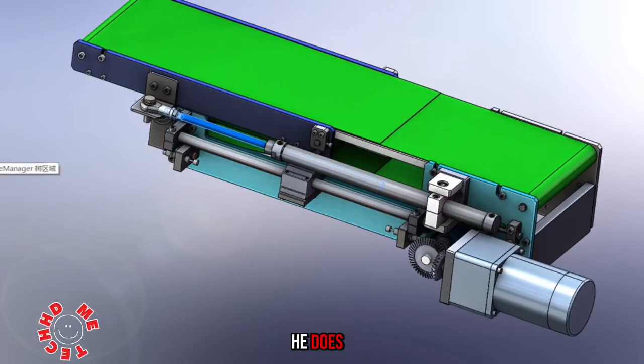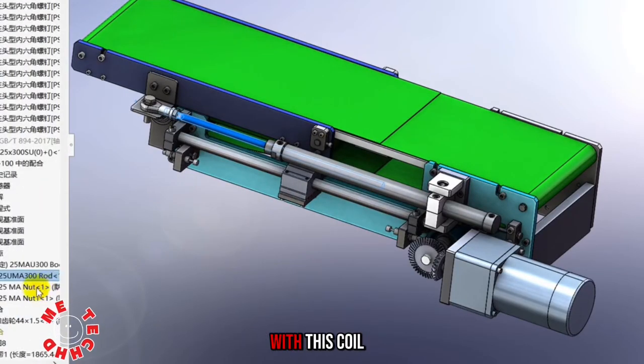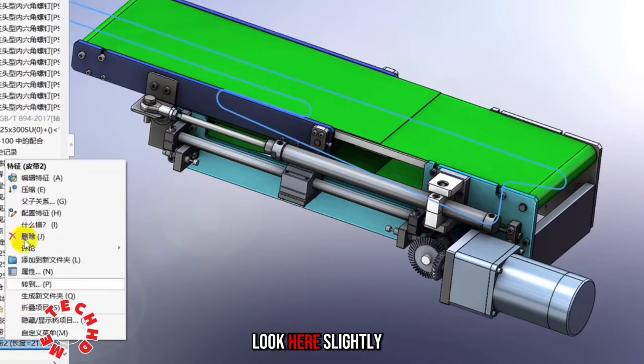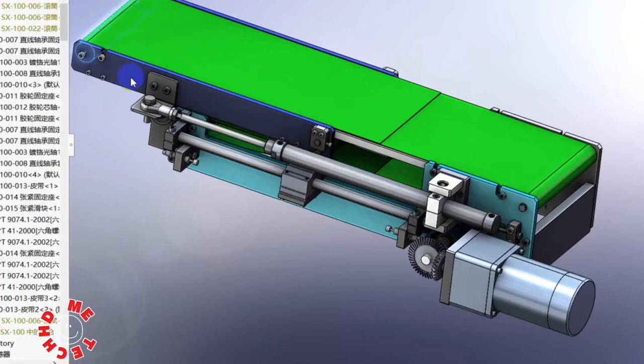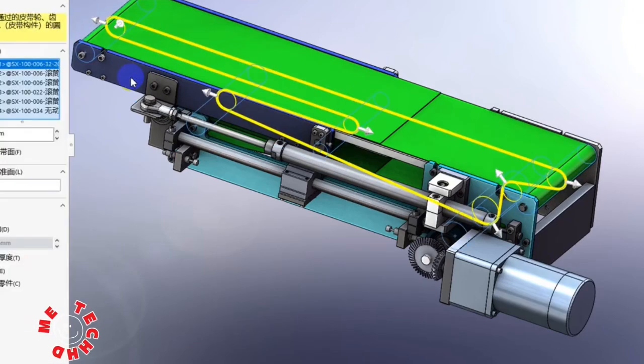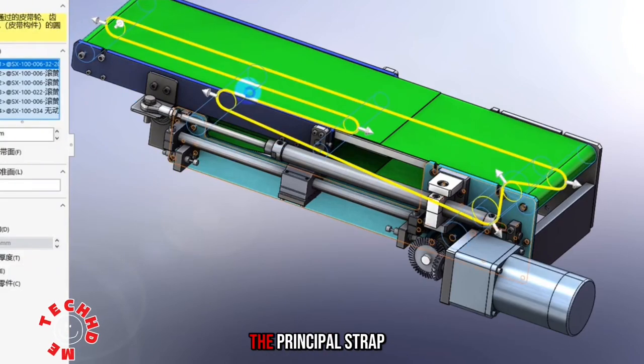We've got to understand the problem with this coil. Let's take a look and edit this feature. Here's what we drew - this is the principal strap.